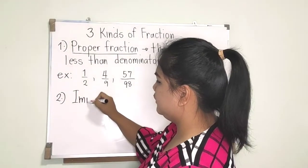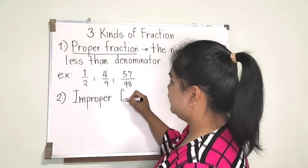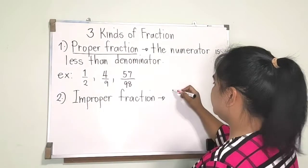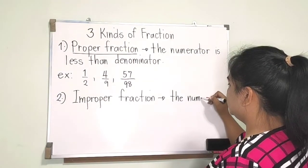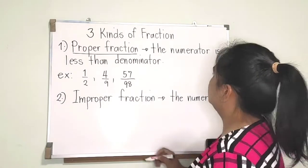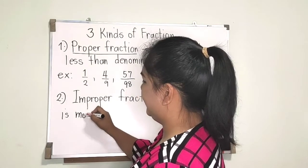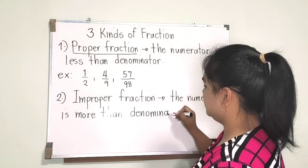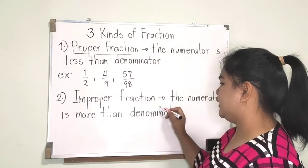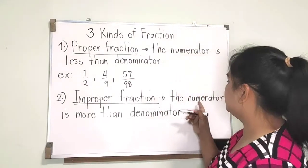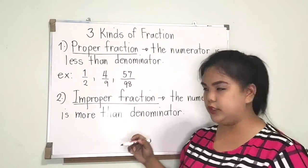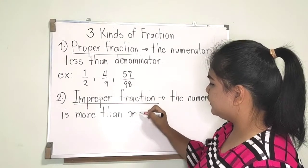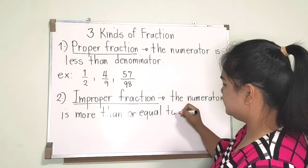Next, we have improper fraction. In an improper fraction, the numerator is more than the denominator — or sometimes it's stated as more than or equal to the denominator.